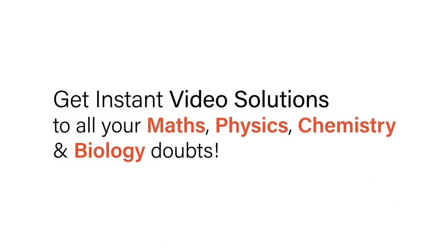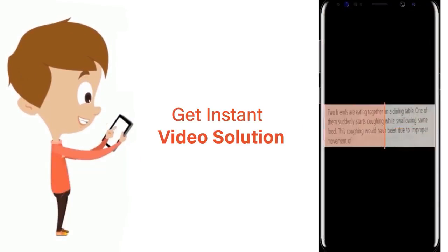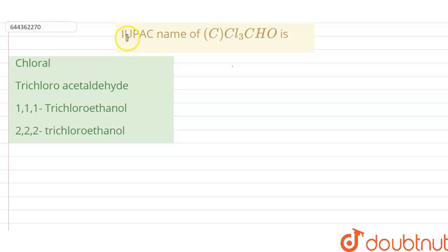With Doubtnet, get instant video solutions to all your maths, physics, chemistry and biology doubts. Just click the image of the question, crop the question and get instant video solution. Download Doubtnet app today. Hello, so our question is we have to write the IUPAC name of CCl3CHO.